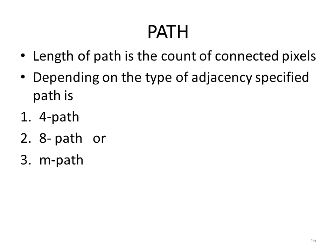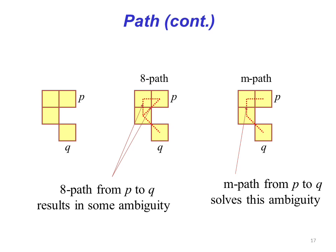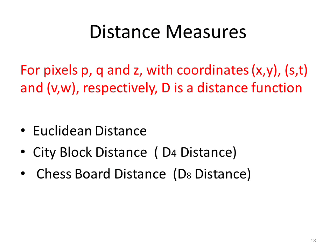To avoid the ambiguity of 8-path between p and q as shown in the figure, we can always consider m-path. This resolves the ambiguity in connectivity between p and q which is obtained because of 8-path.